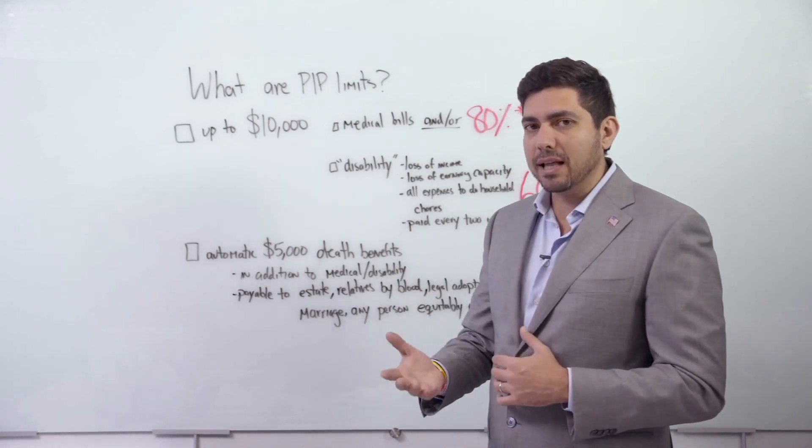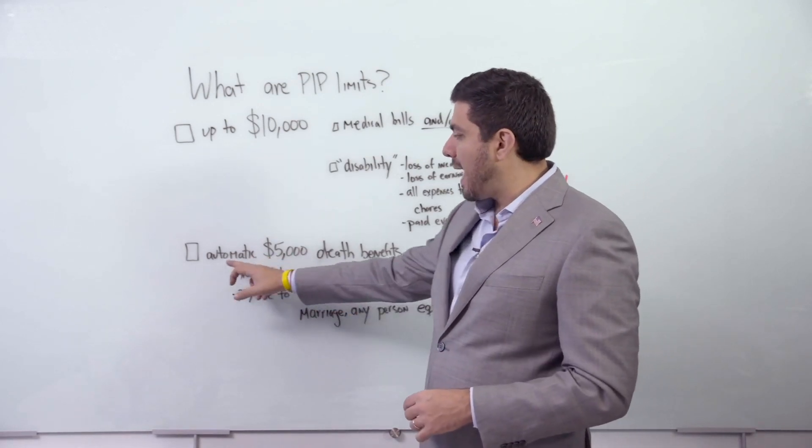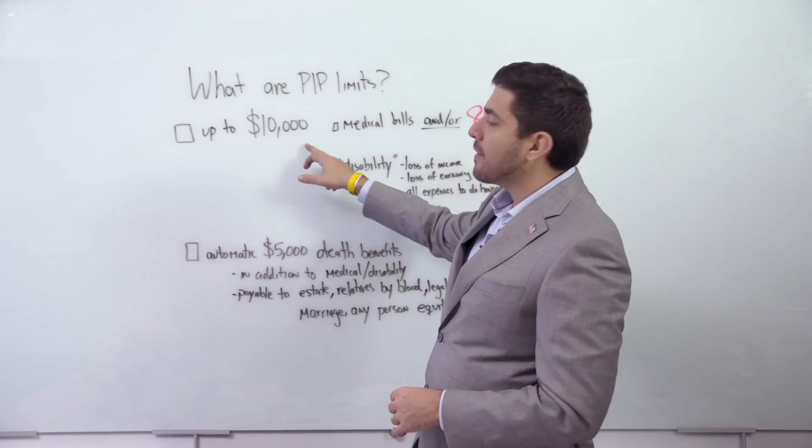Everybody's looking at the BI limits, the UM limits—who can we go after? But they always forget that there's an automatic $5,000. The medical bills are up to $10,000.